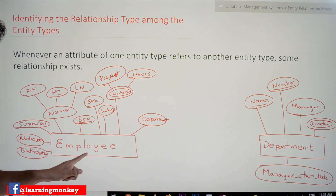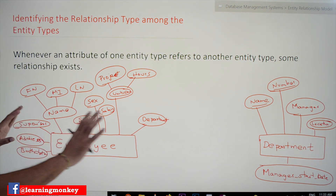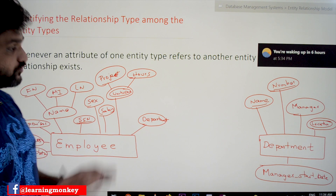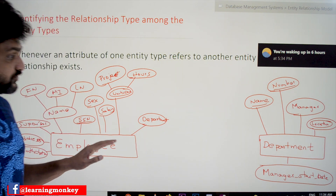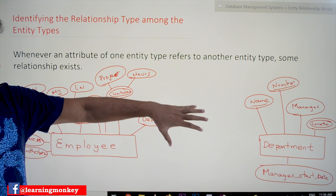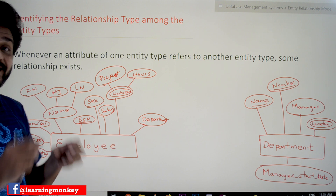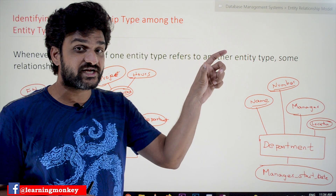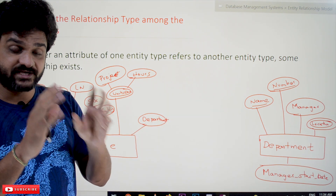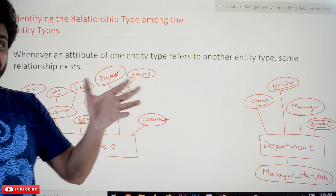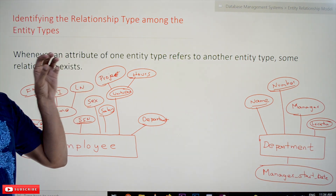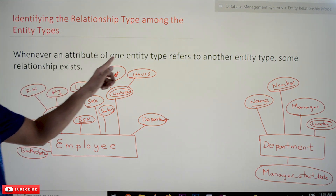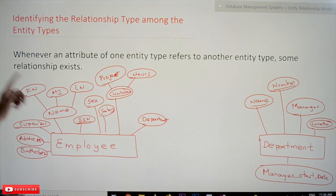For better understanding, we will take two entity types: employee and department. From these two entity types, we will try to identify a relationship type. Relationship means you take any two entity types and among them there exists a relationship — it is implicit. We have discussed that the definition of a database is the collection of related data. Whenever an attribute of one entity type refers to another entity type, some relationship exists.